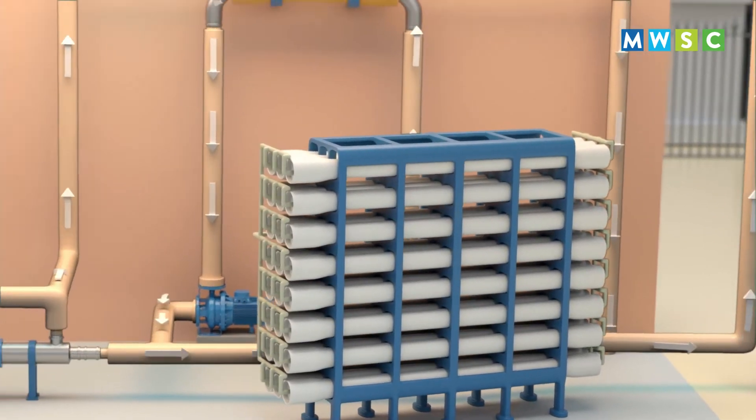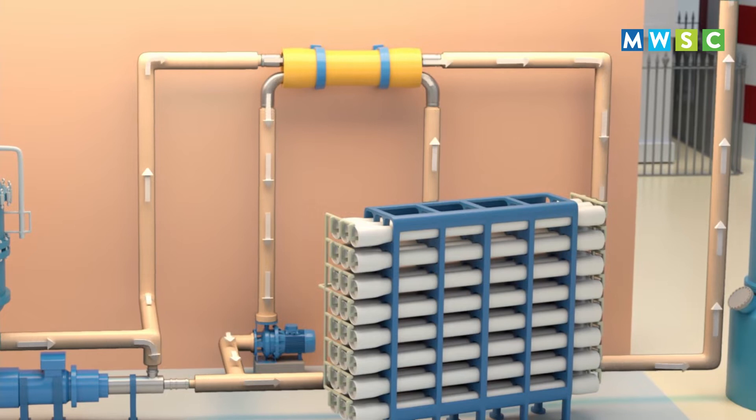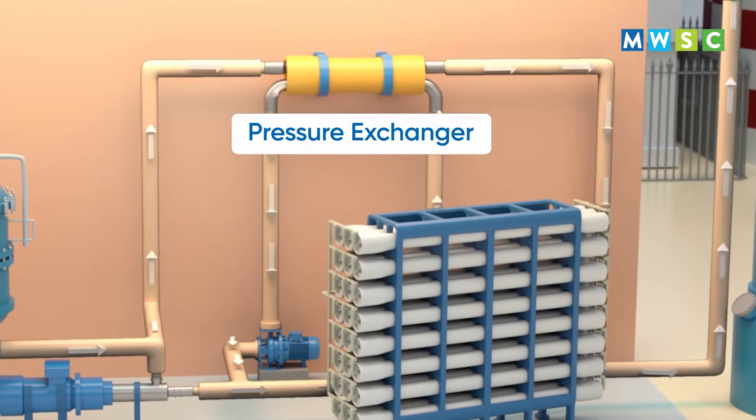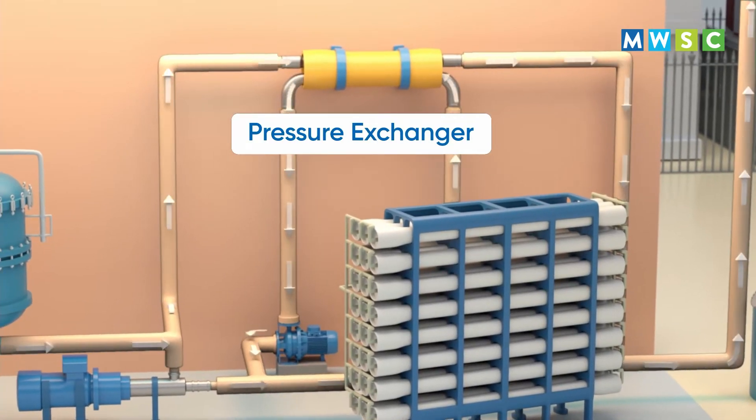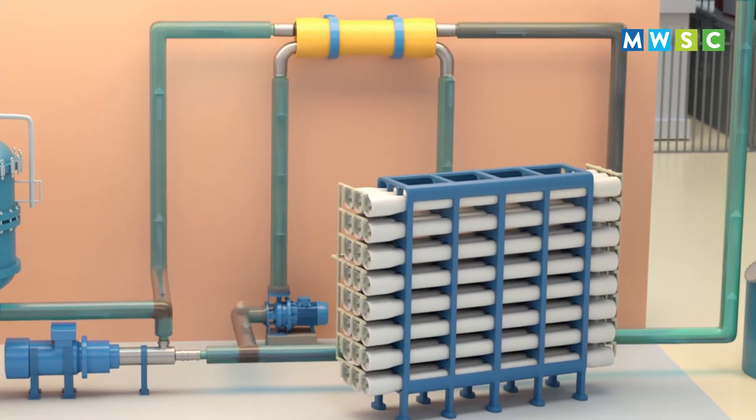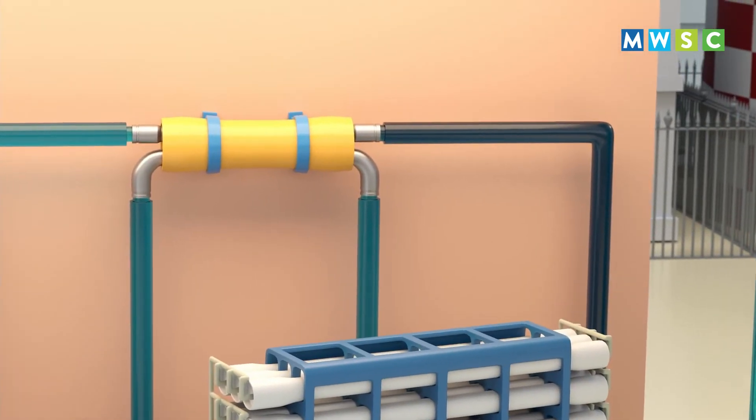This energy is recovered using a pressure exchanger, which helps to recycle up to 60 percent of wasted energy, driving substantial savings and reducing emissions. The rejected brine water is discharged into the sea.